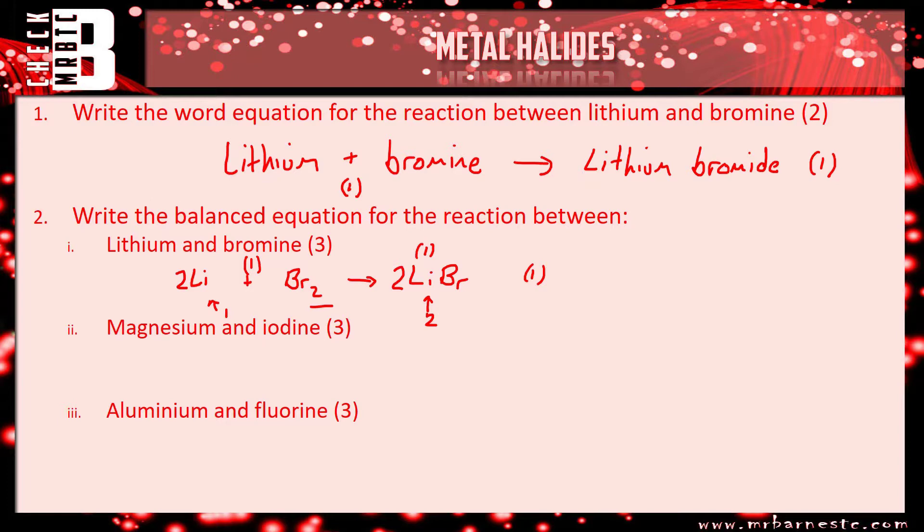If you look at magnesium and iodine, magnesium is Mg. Iodine, again, diatomic, so I2. Go across. And you can see here, it's a group 2 element, therefore it is going to be MgI2. It's already balanced, so you get three marks for just having the left and the right-hand side here.